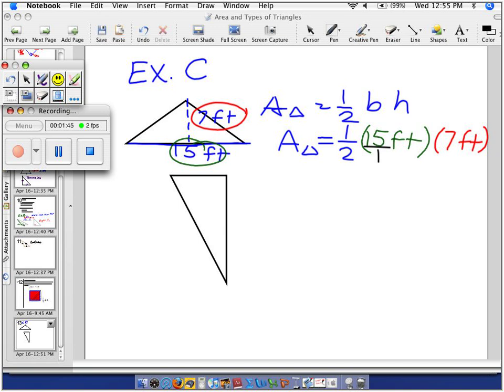So I can multiply denominator times denominator times denominator. Which one are those? The numbers down below, right here, 2 times 1 times 1 is 2.